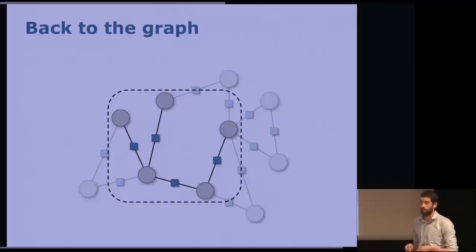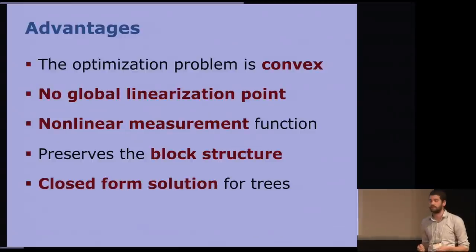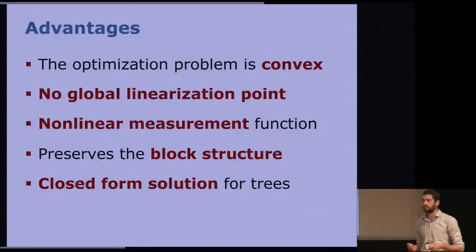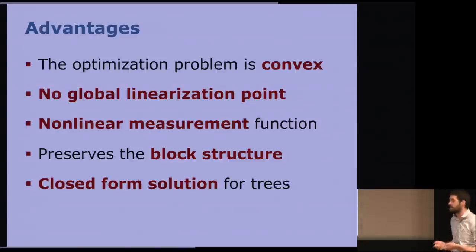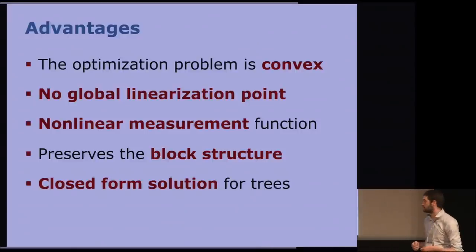Our method has some particular advantages. First and foremost, the fact that the optimization problem for the computation of the factors is convex. Therefore, we are able to compute always the global optimum and efficiently. Not only that, for the particular instance of tree topology, we are even able to give a closed form solution to the problem. Then, we do not really require a global linearization point. In fact, we are totally abstract from it by optimizing the Markov blanket. We can use any nonlinear measurement function. In this particular work, we restricted ourselves to relative SE2 measurements, but any can be used in principle. And finally, since we are computing actual factors and not working on the information matrix, we will preserve the block structure of the information matrix.